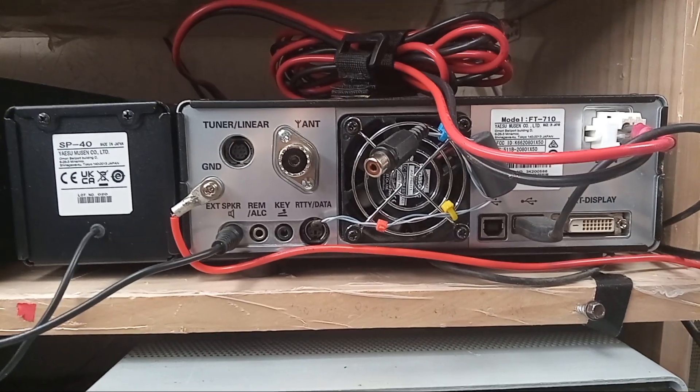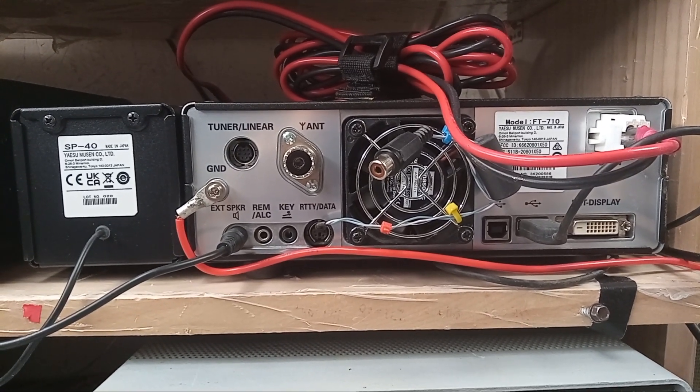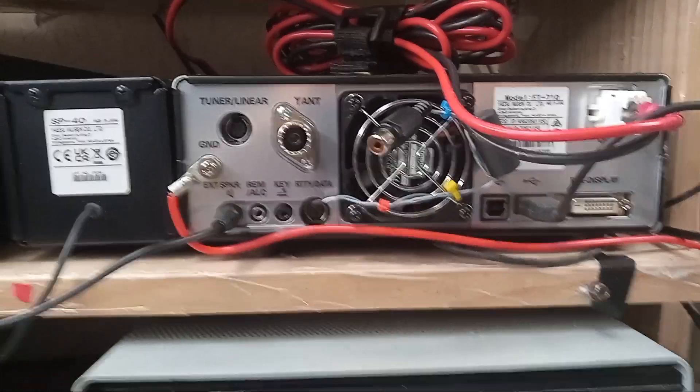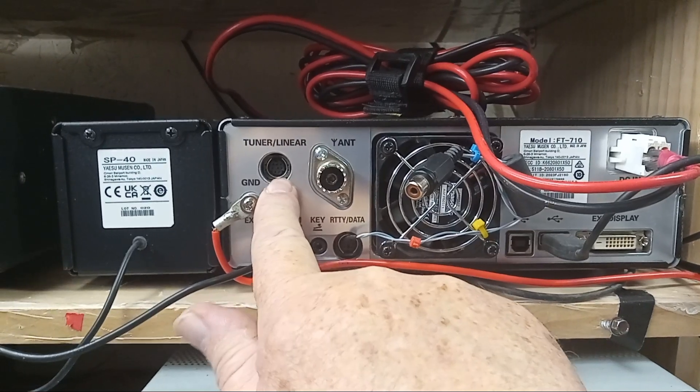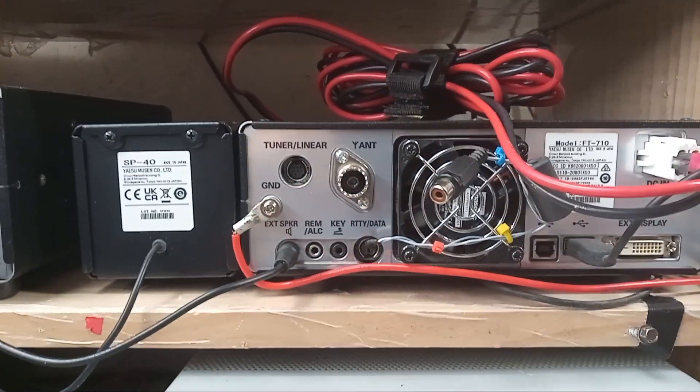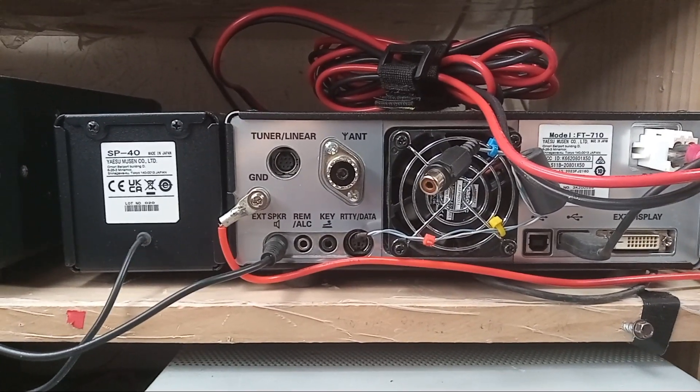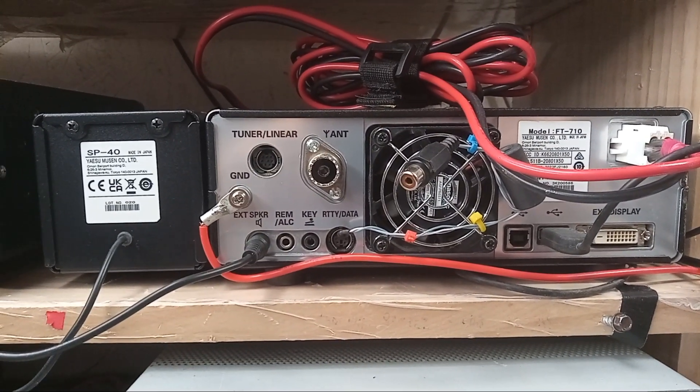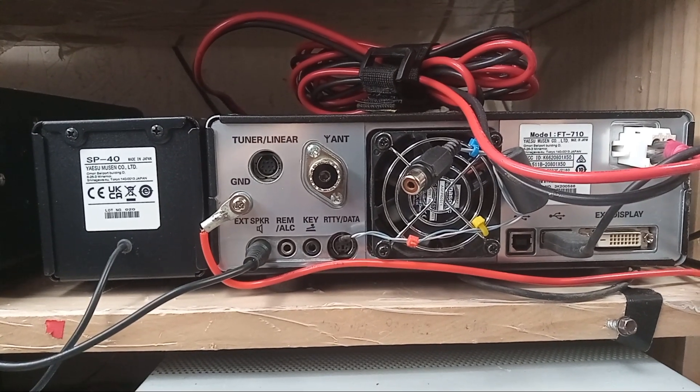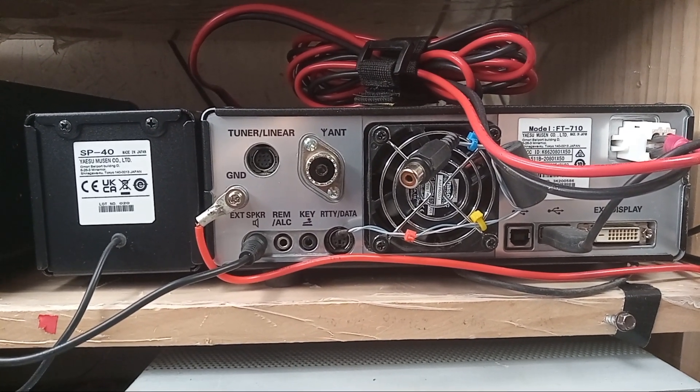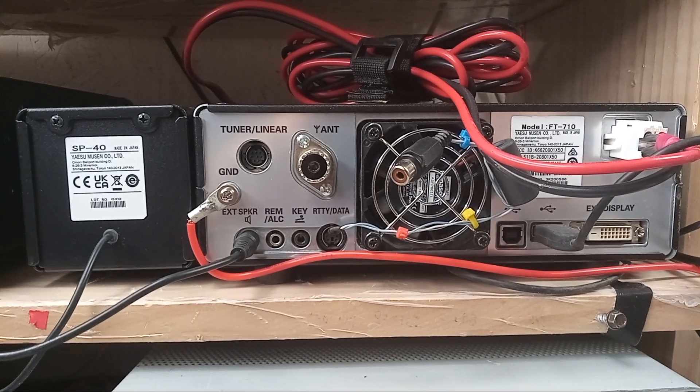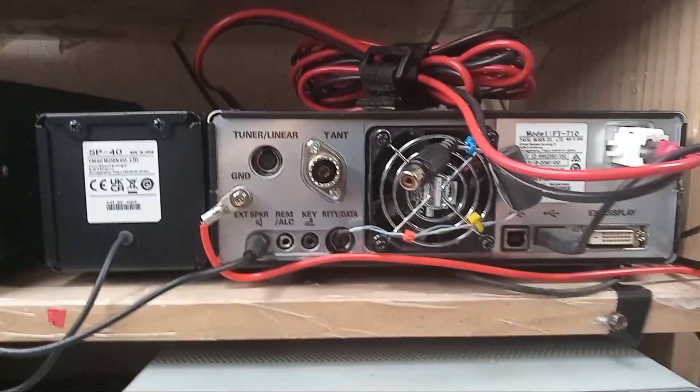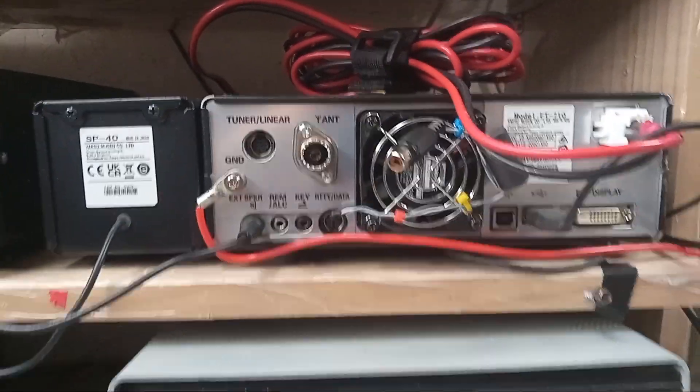Now Yaesu has an amplifier model number VL-1000 and it has an interface cable that connects to the amplifier that controls the PTT and I think it pre-selects the bands, gets it set up. So if you change a band on the radio, the amplifier changes the band. If you want to run an external amplifier that's not a Yaesu amp, they made it difficult.